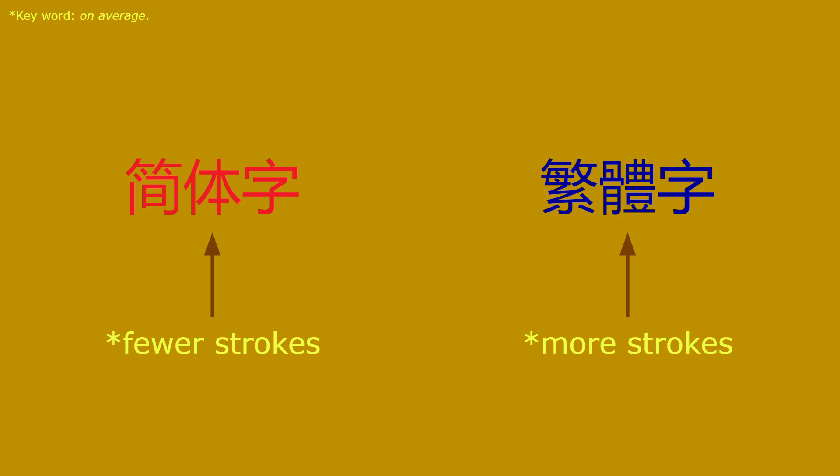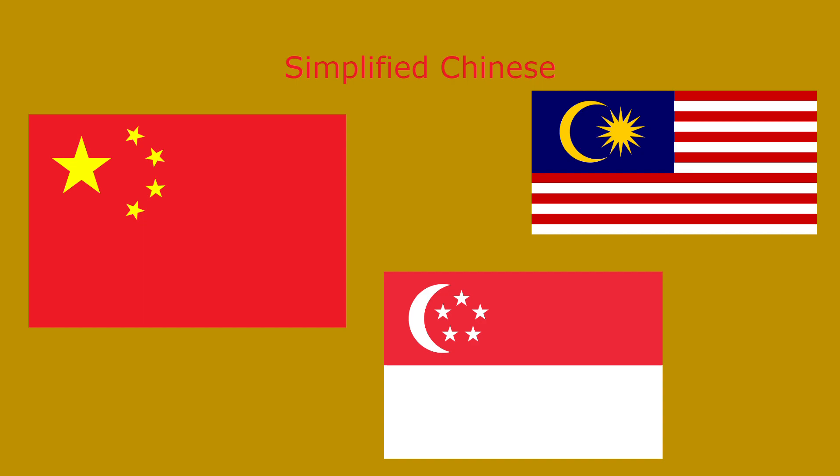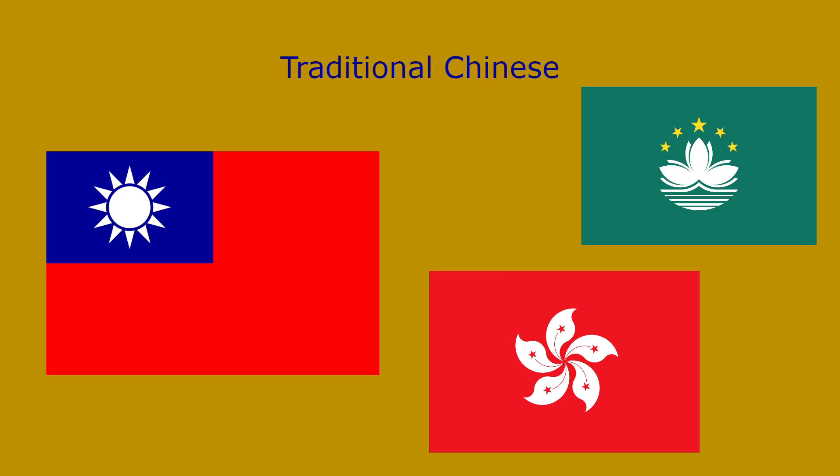Simplified Chinese characters, on average, have fewer strokes than traditional Chinese characters. Simplified Chinese is used primarily in mainland China, Singapore, and Malaysia. Traditional Chinese is used primarily in Taiwan, Hong Kong, and Macau.